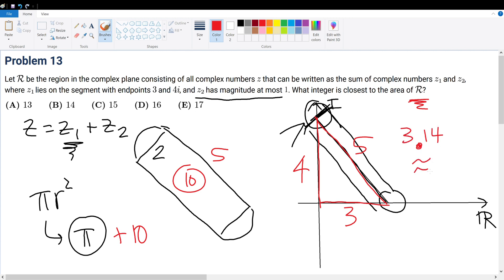So 3.14 is the special value you should know for π, and that would be roughly equal to 3. And therefore 3 plus 10 must give 13, bringing you to answer choice A.